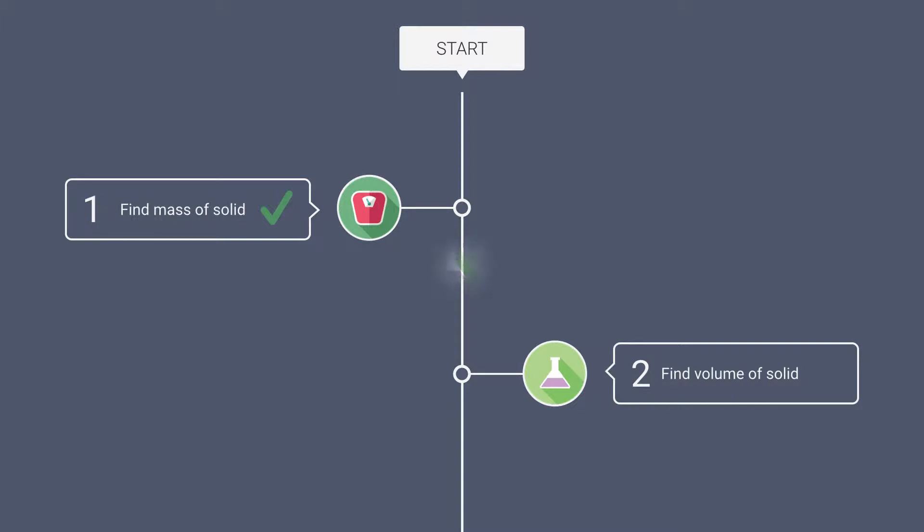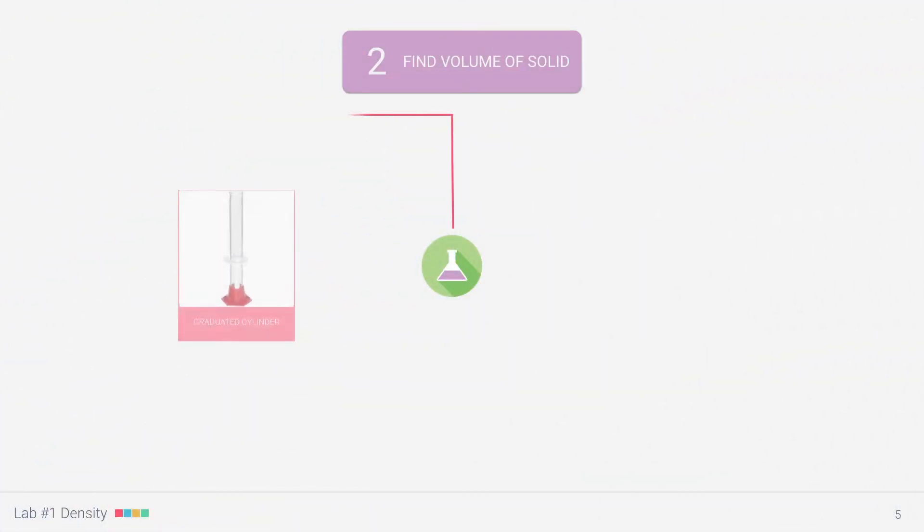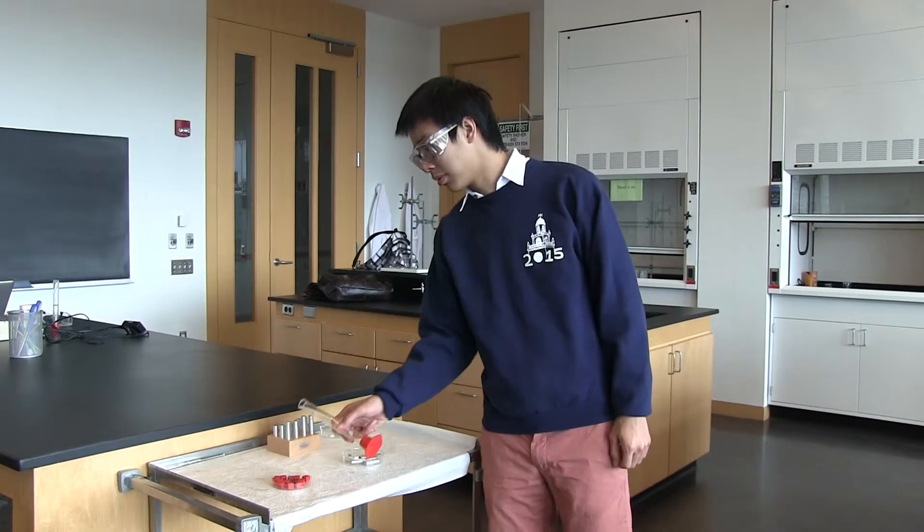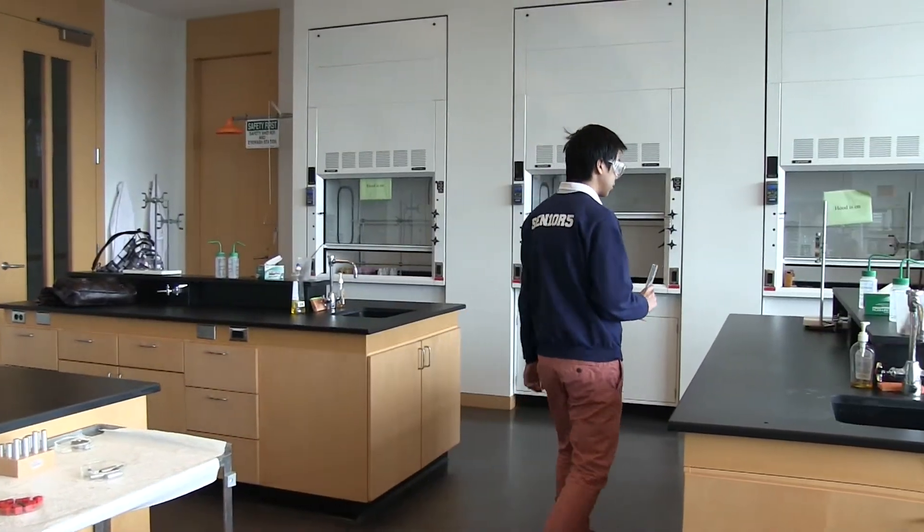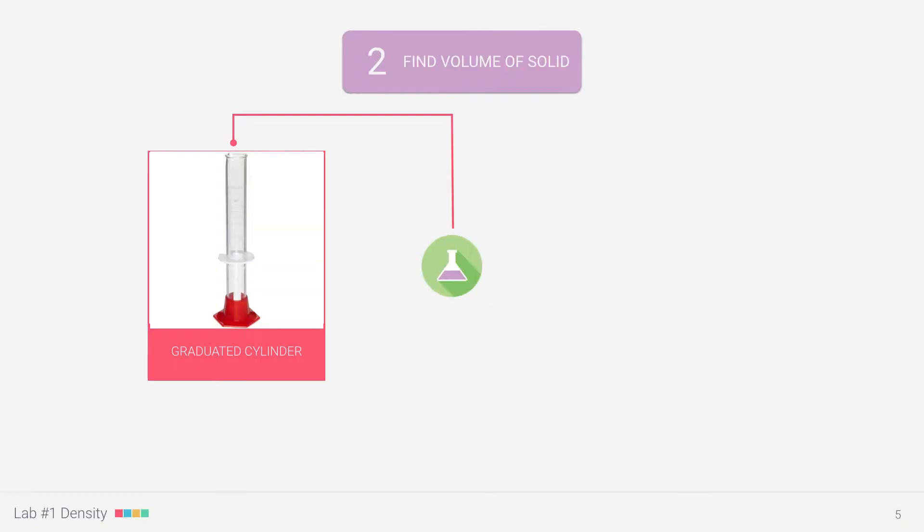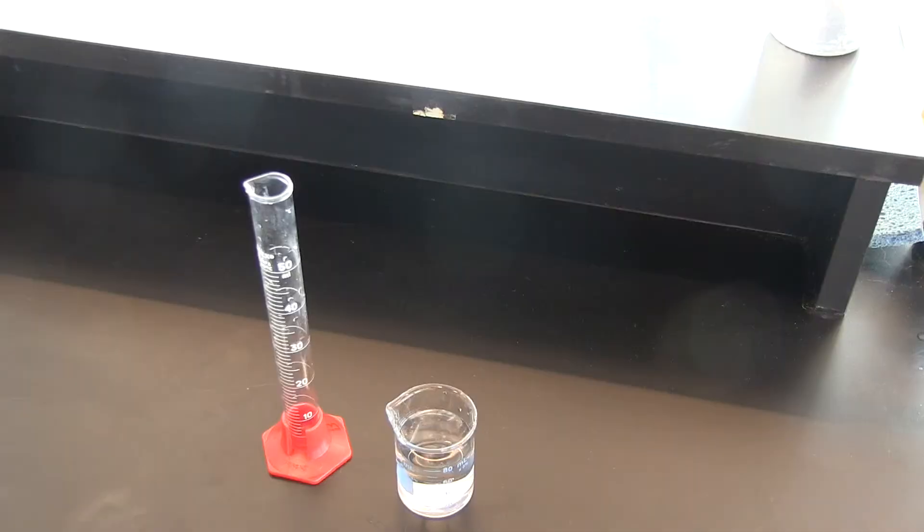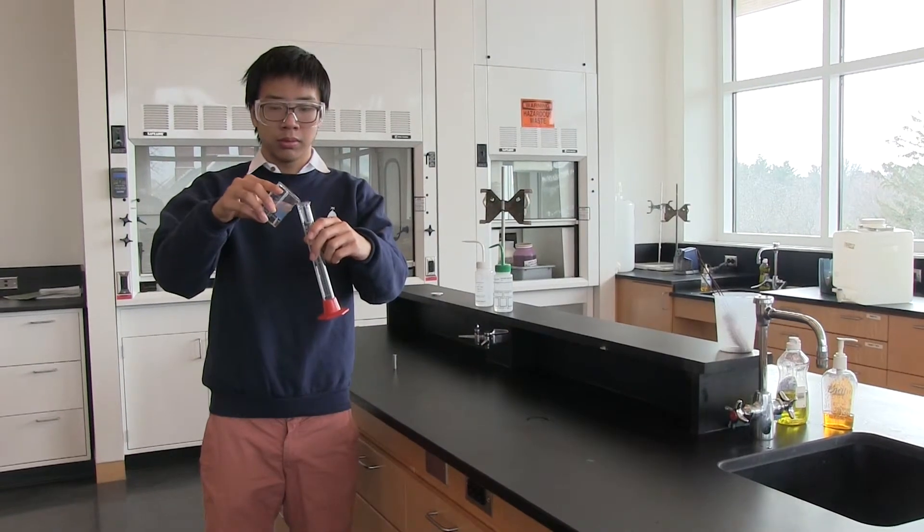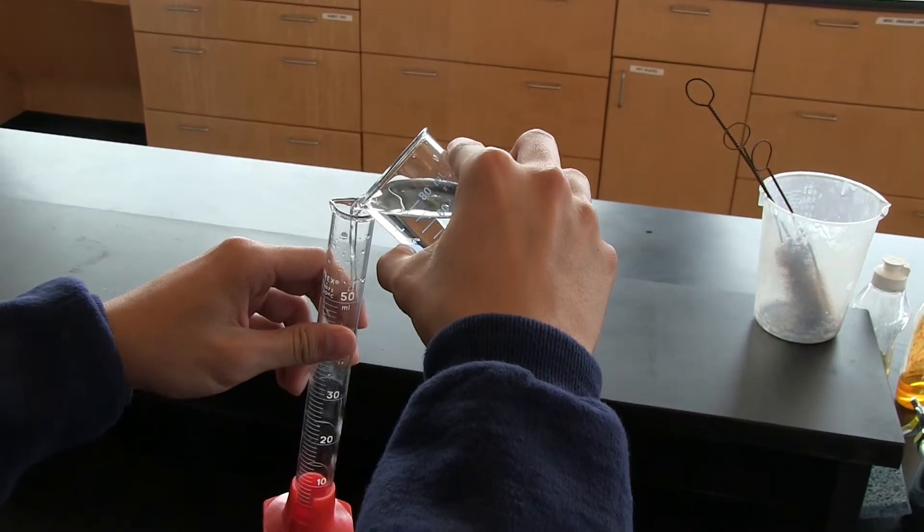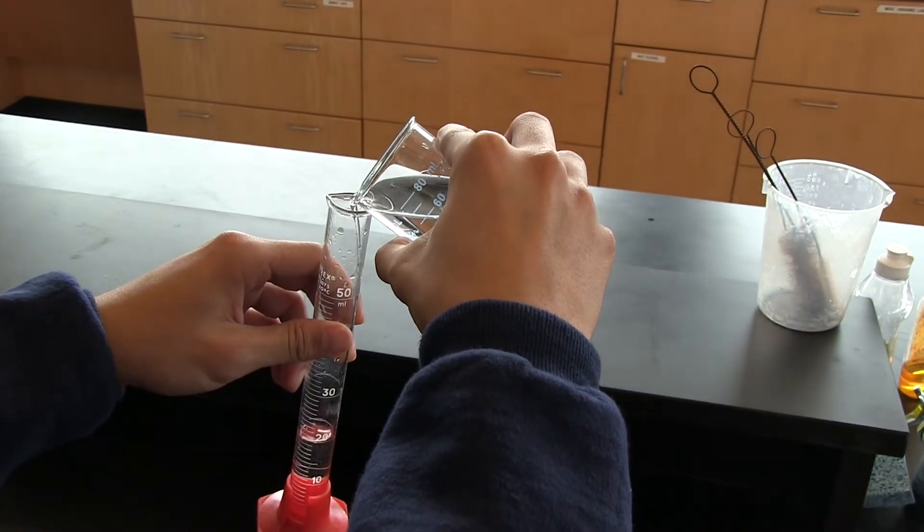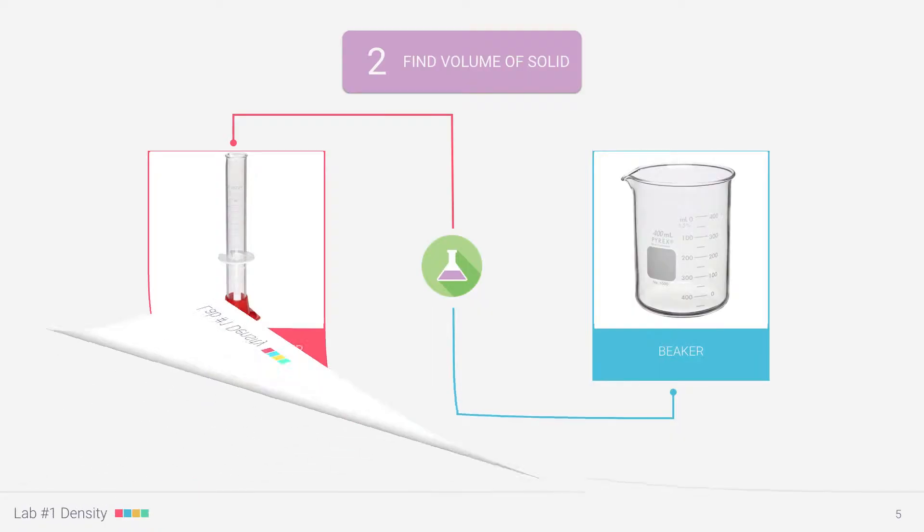Step two, find the volume. To find the volume, we're going to use a graduated cylinder. Grab one of the larger cylinders from the cart and head over to the bench. We'll also need to use a beaker, which you can find in one of the drawers. Fill your beaker up with tap water and then pour the water from the beaker into the cylinder, filling the cylinder about halfway. But before we go any further, let's figure out our game plan and take a look at what we're doing.